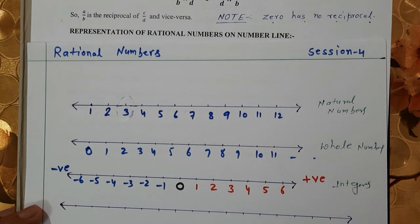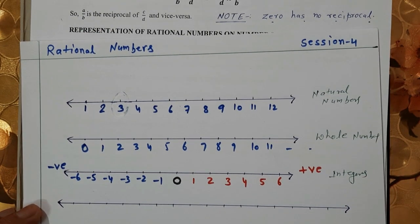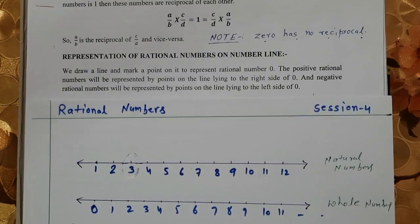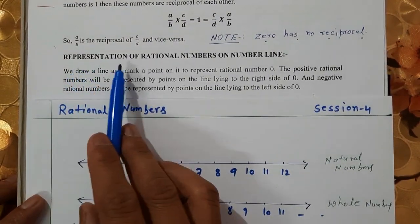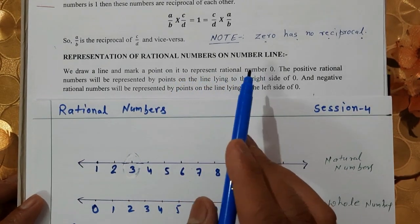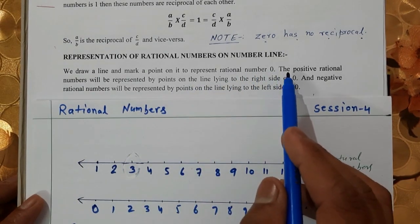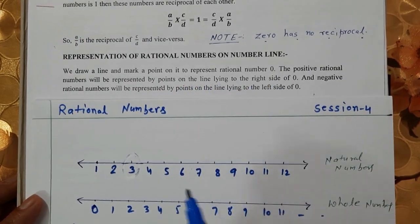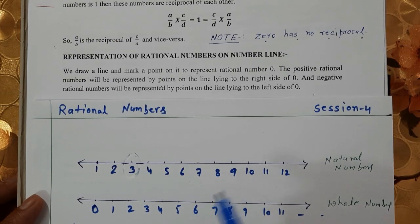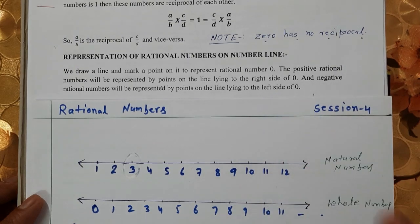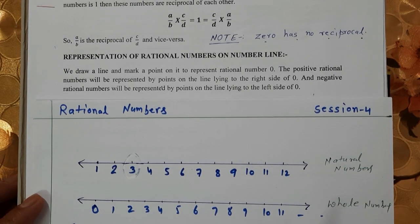Now, if we have to represent 1/2, minus 1/2, 3/4, or any other rational number, we need to learn how to represent rational numbers on the number line. We draw a line and mark a point to represent 0. Positive rational numbers are represented by points to the right side of 0, and negative rational numbers are represented by points to the left side of 0.